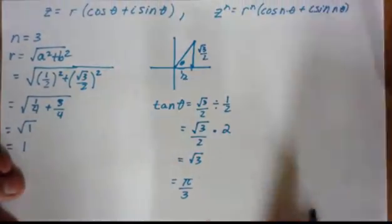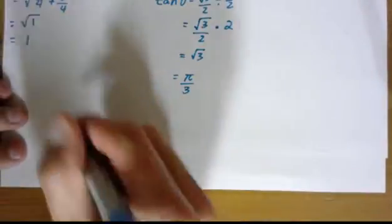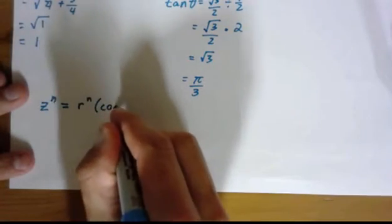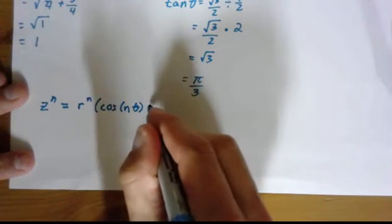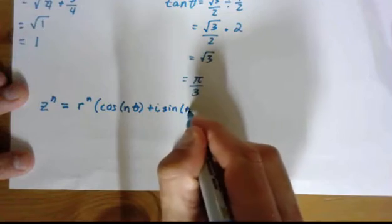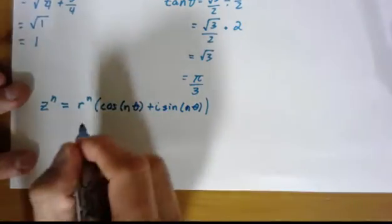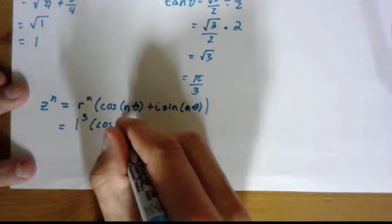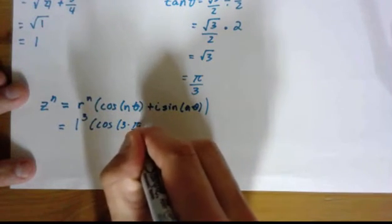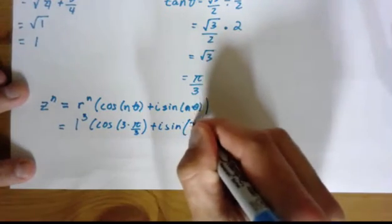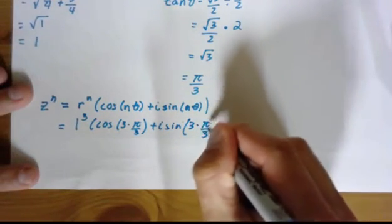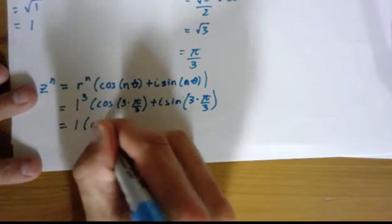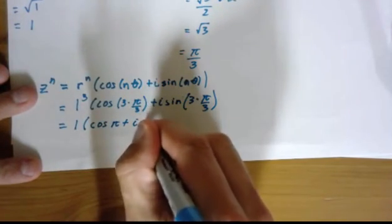So now we apply our property. We're going to say z to the n is equal to r to the n times cosine of n theta plus i sine of n theta. Let's substitute one to the third. That's n cosine of three times theta, which theta was pi over three, plus i times sine of three times pi over three. The threes cancel. Well, they don't cancel. They become one. So you get one times cosine of pi plus i sine of pi.